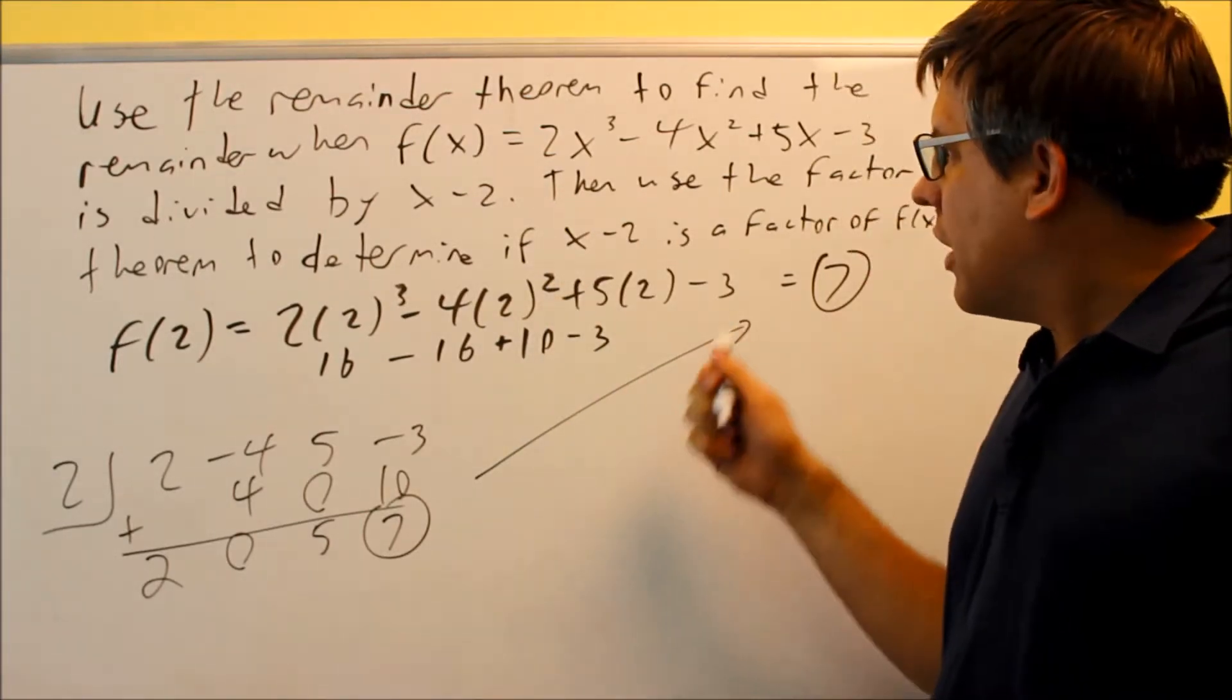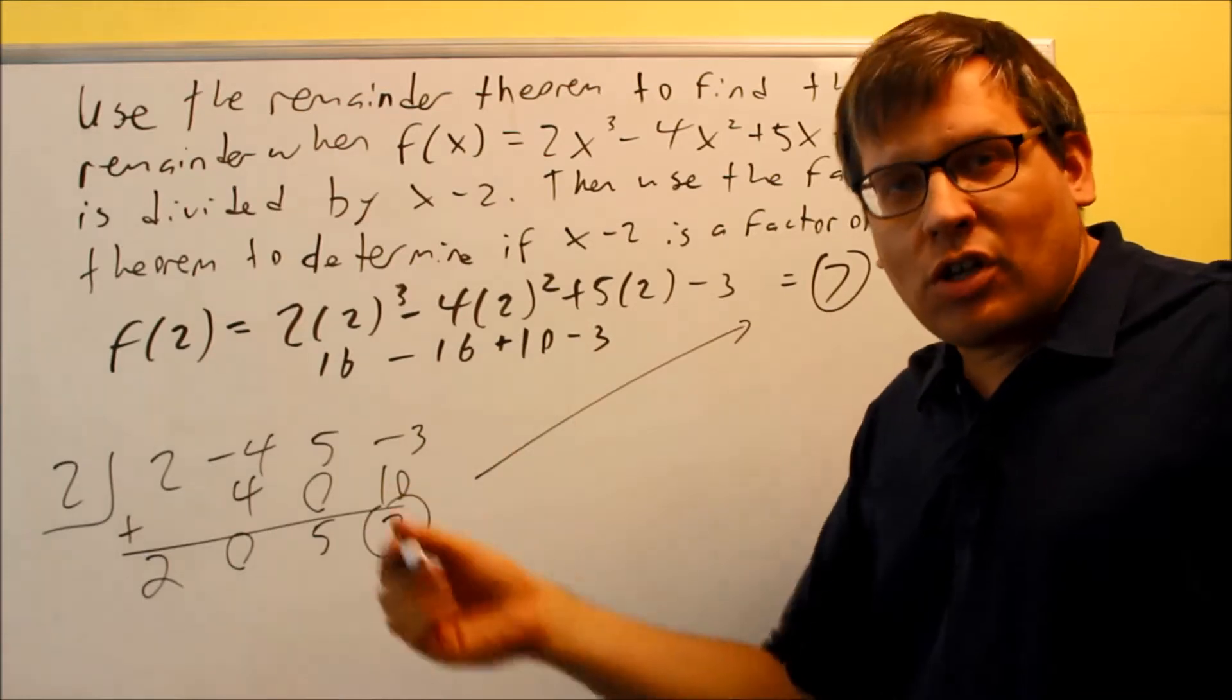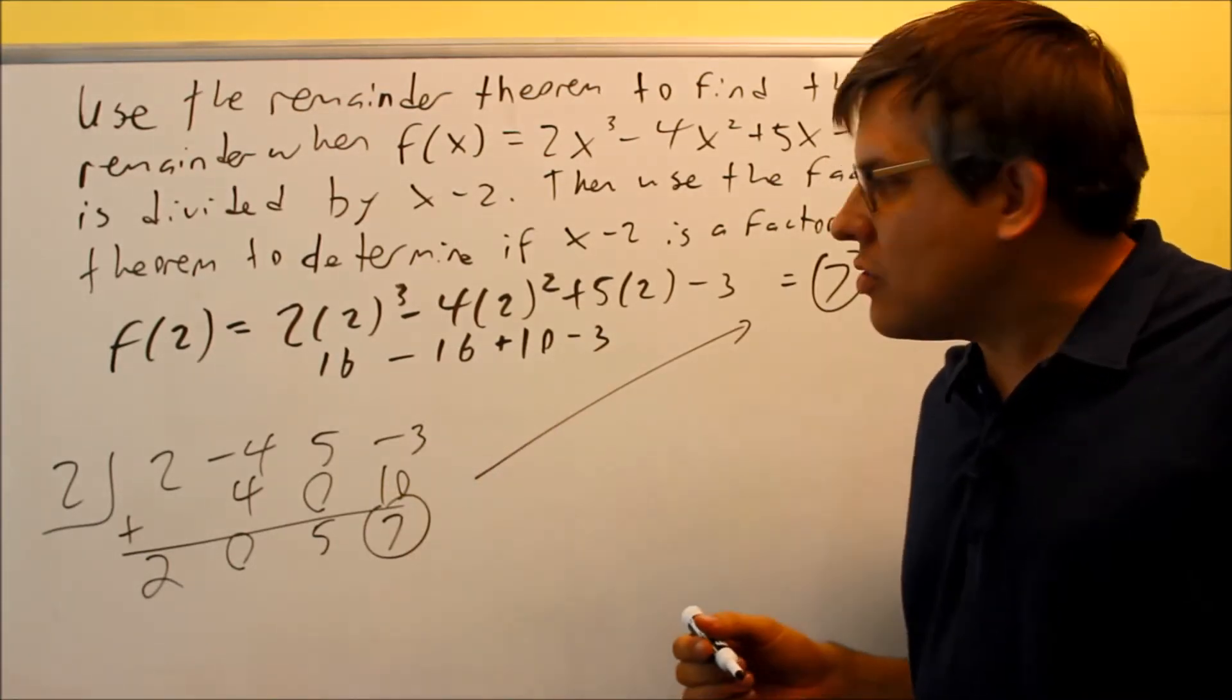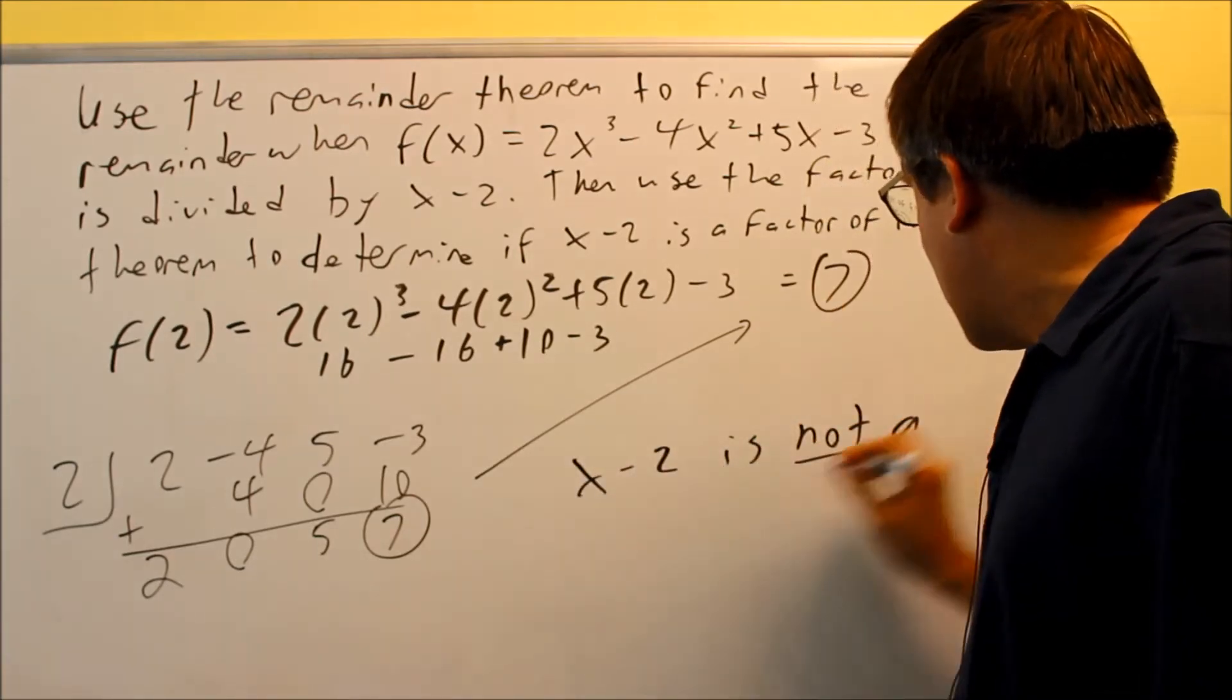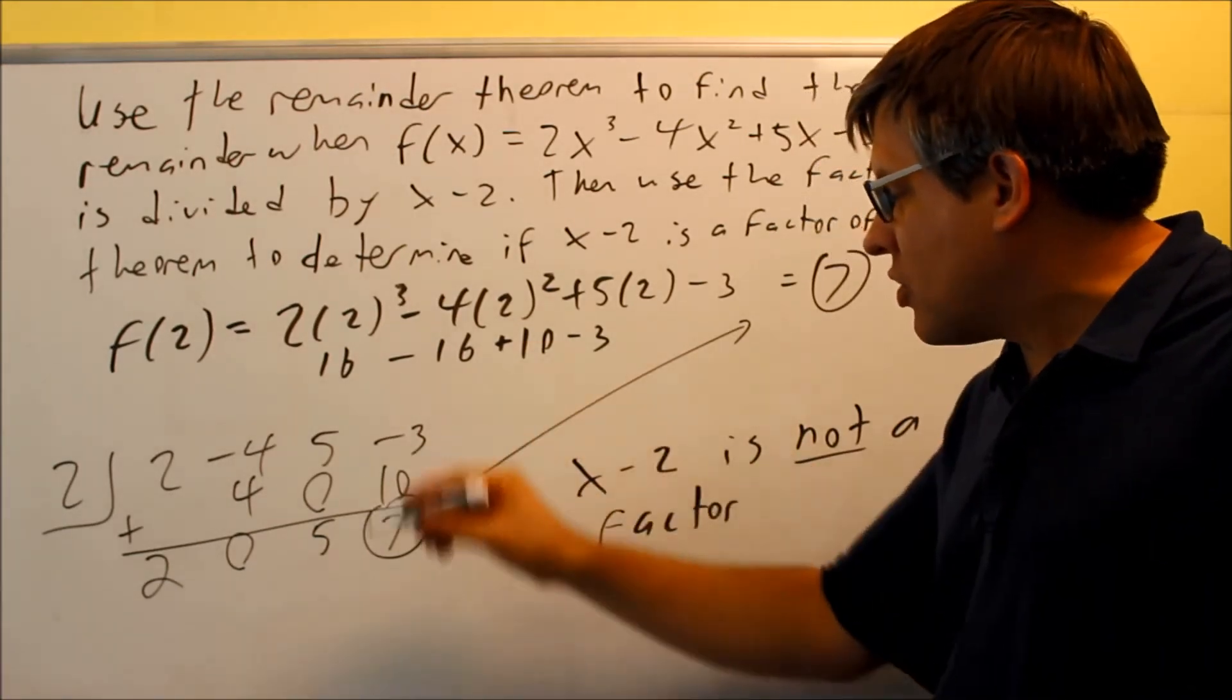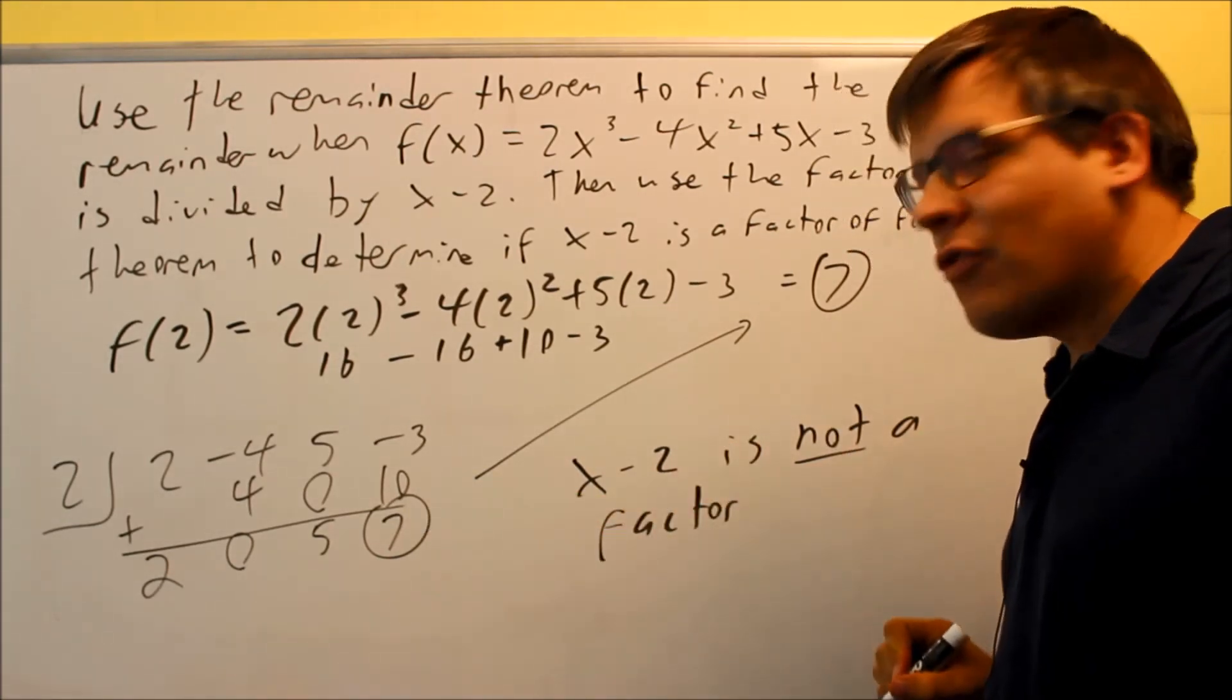Okay, the definition says here that if it's a factor, that means you need to get a remainder of 0. If something divides in evenly, that means you should not have anything left over. That means the remainder should be 0. So in this case, x minus 2 is not a factor. And that's because, again, when we did the synthetic division, we did not get a 0 for our answer. So because we didn't get a 0, that means it's not a factor.